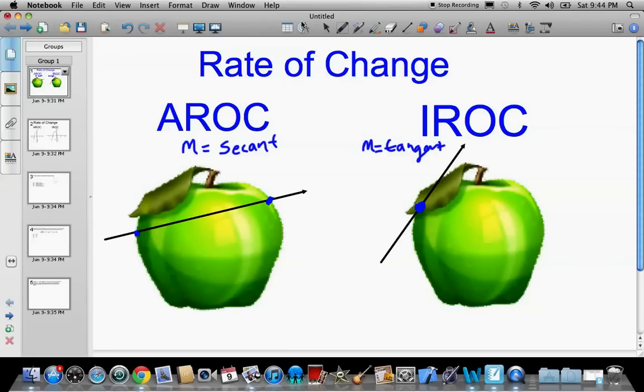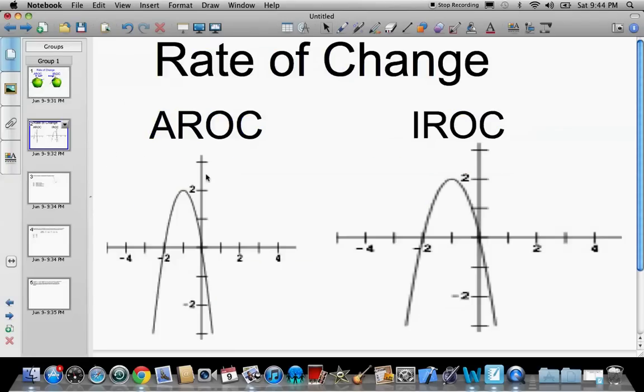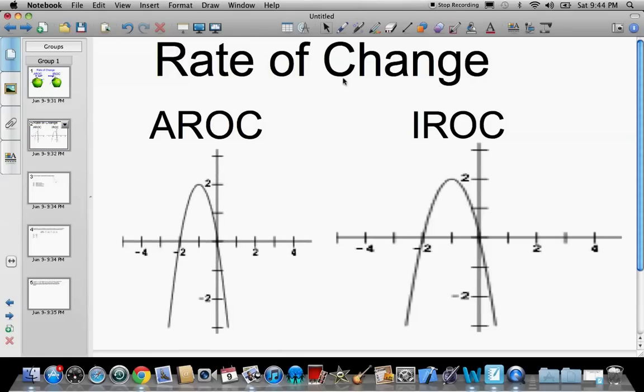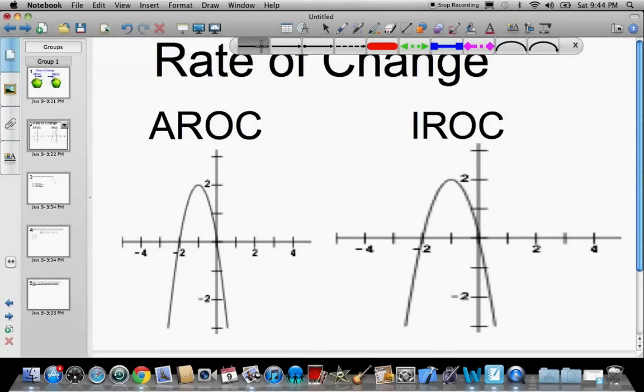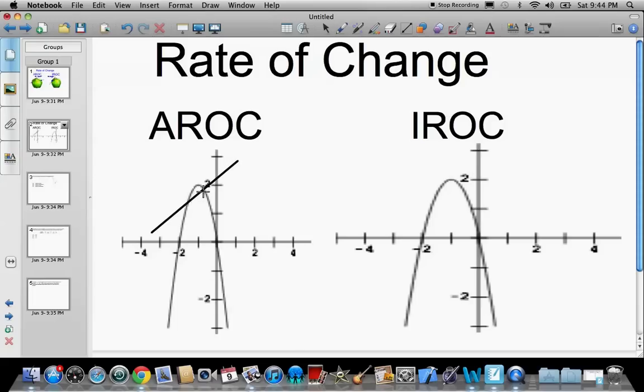Alrighty, so let's see what that looks like on a graph. So AROC on a graph is going to look very similar to what I just showed you. It touches two points. So it could be touching these two points just like that, or touching two points across like this. It could be at any two points on the graph. But again, it's the slope of this line. That's all rate of change is. It's the slope of a line.